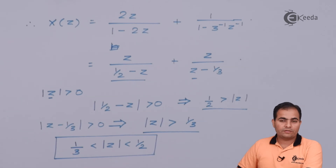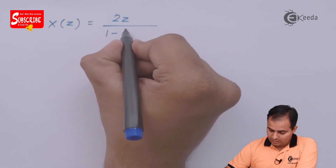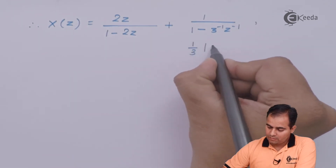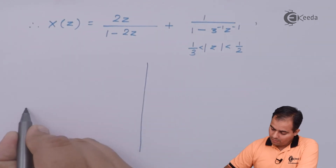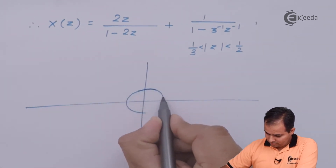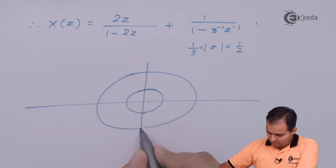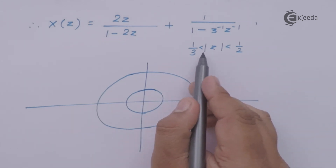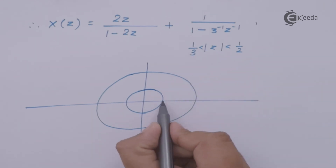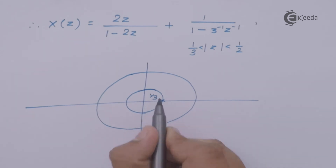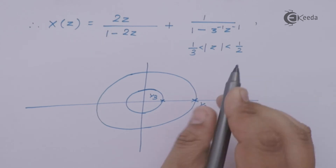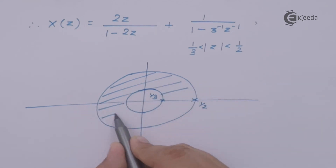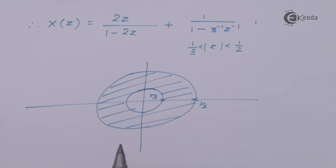We now plot the ROC. The ROC exists between the two circles: the inner circle has radius 1/3 and the outer circle has radius 1/2. The ROC lies perfectly in between 1/3 and 1/2, which is the annular region in the z-plane.